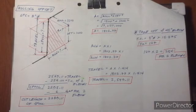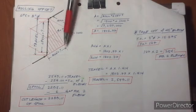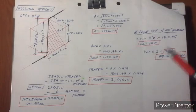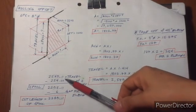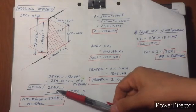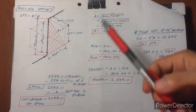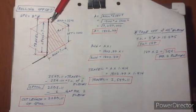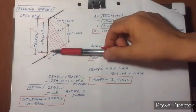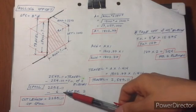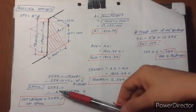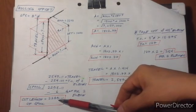Now we have the value of the two elbows to get the spool length. The travel measurement is 2,549.11. We subtract the takeoff of the two elbows: 2,549.11 minus 254 equals 2,295.11. Then we subtract 6 mm for the welding gap — 3 mm per joint, and we have two joints, so 3 plus 3 equals 6 mm. After subtracting the gap, the answer is 2,289.11.